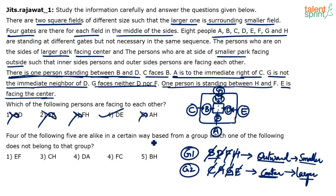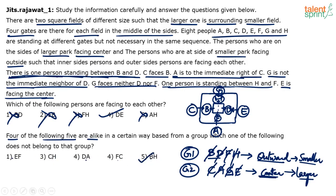Question 2: Four of the following five are alike in a certain way based on the arrangement — which one does not belong to that group? Looking at the options: E,F — E is outer field, F is inner field. C,H — C is outer, H is inner. D,A — D is inner, A is outer. F,C — F is inner, C is outer. B,H — B is inner, H is inner. All pairs except B,H contain persons from different fields. B and H are both in the inner field, making B,H the odd one out. So option 5 is the answer. Similarly the other 3-4 questions can be answered very easily.